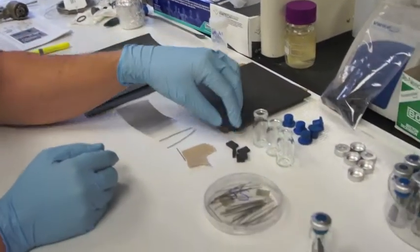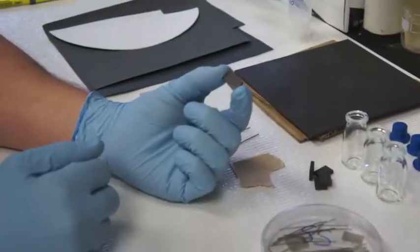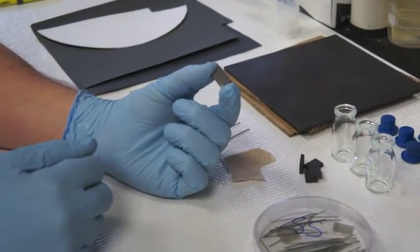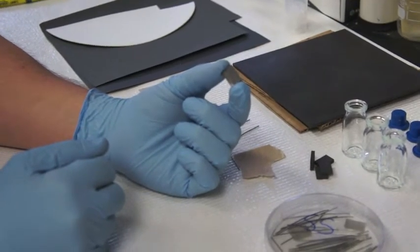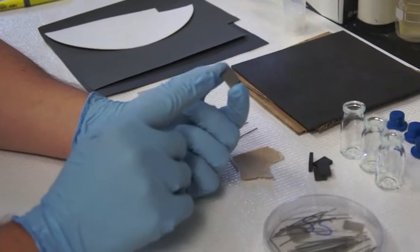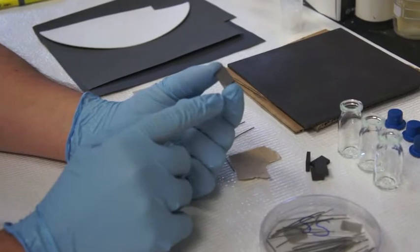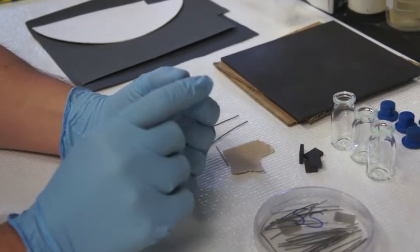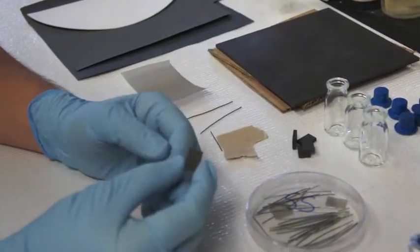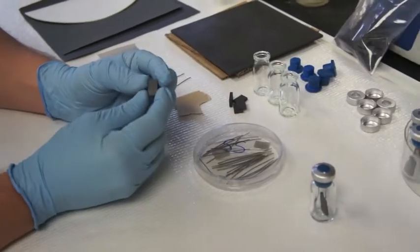Now what you want to do first is get this graphite plate cut into smaller blocks. So these small blocks are 1.5 cm by 1 cm and you don't need anything fancy done to them, they don't need to be milled, they just need to be simply cut, that's all.